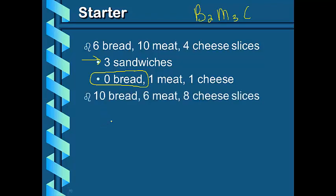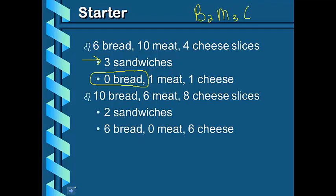Now, next combination, we have 10 pieces of bread, 6 pieces of meat, and 8 slices of cheese. Now, this combination, we can make 2 whole sandwiches. We're going to have 6 pieces of bread left over. This time, we're going to run out of meat first, and we're going to have 6 pieces of cheese left over. Remember, this is our formula for our total sandwich.